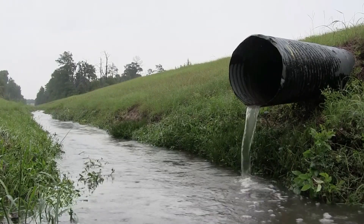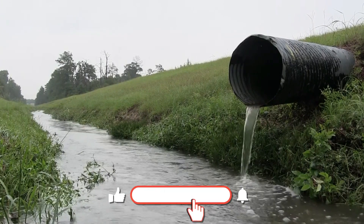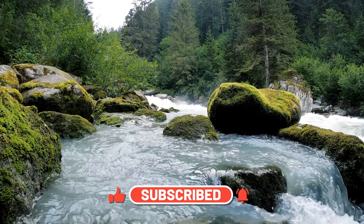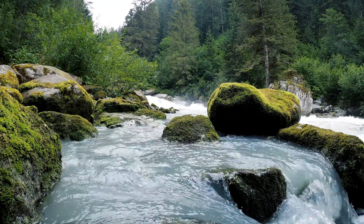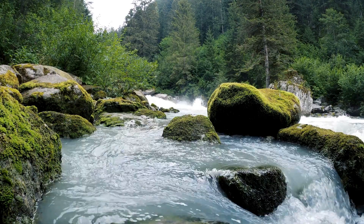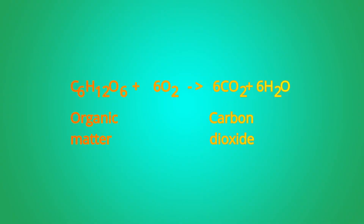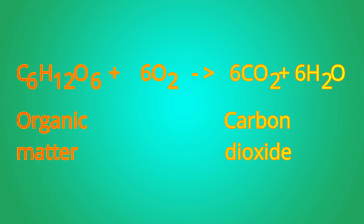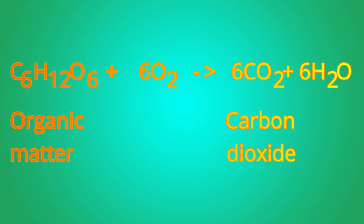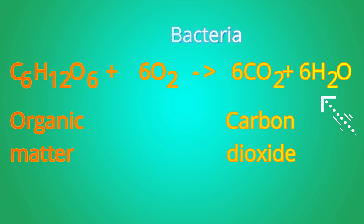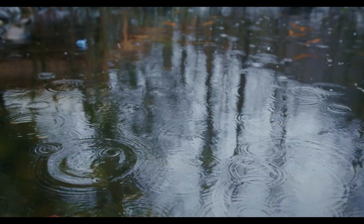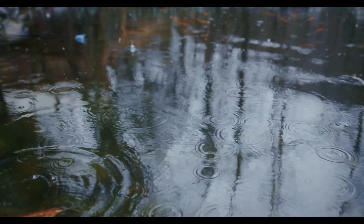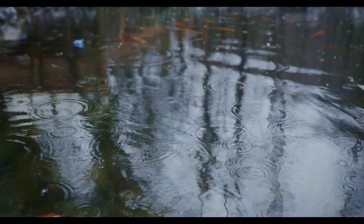If an oxygen-demanding organic waste is released into the water, the process of self-purification may occur. In this process, there is a restoration of balance in the aquatic environment by essentially natural mechanisms, after the alterations induced by the wastewater discharges. During this process, organic matter will be oxidized, releasing carbon dioxide, according to the reaction: organic matter + oxygen + bacteria → carbon dioxide + water + bacteria + energy. Atmospheric reaeration and photosynthesis will also occur, replenishing the oxygen content in the water, if the wastewater release is not very high.